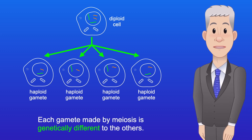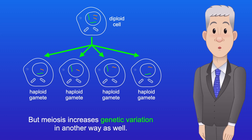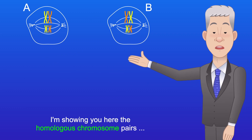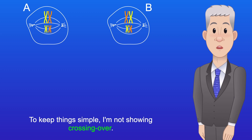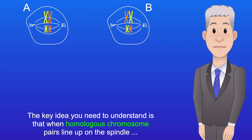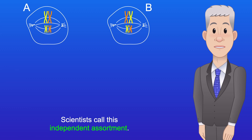Each gamete made by meiosis is genetically different to the others, and we've already seen that crossing over is a major source of genetic variation in meiosis. But meiosis increases genetic variation in another way as well. I'm showing you here the homologous chromosome pairs lined up on the spindle during metaphase I — and to keep things simple, I'm not showing crossing over. The key idea is that when homologous chromosome pairs line up on the spindle, we cannot predict whether the paternal or maternal chromosome will end up in which gamete. Scientists call this independent assortment.